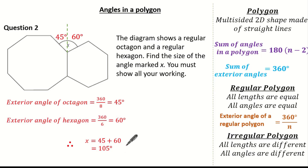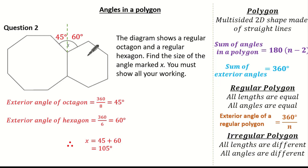The great thing about maths is there is more than one way to get your solution. You could have worked out the interior angles of our polygons and then worked out X from there — either way you still would have got X to be 105 degrees.